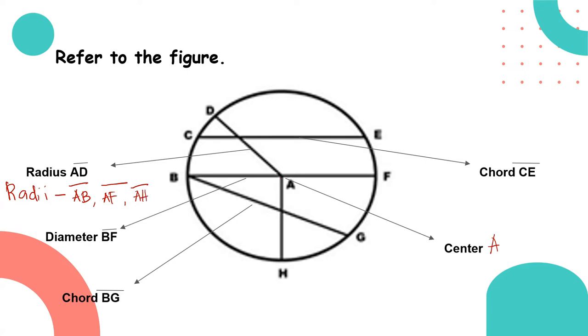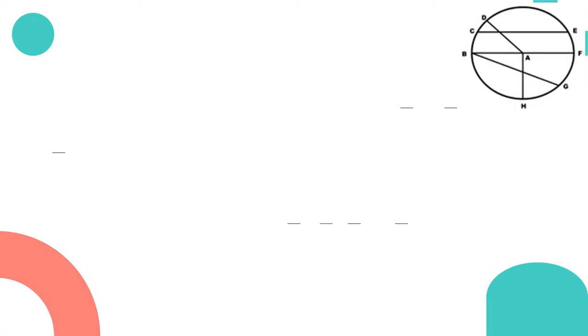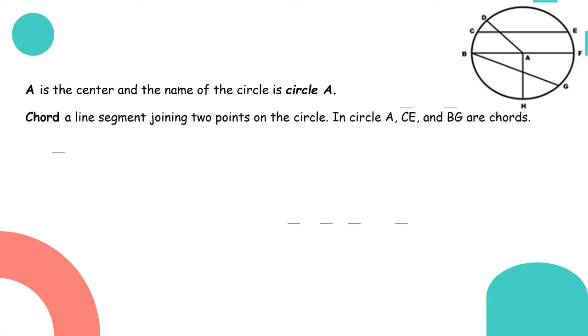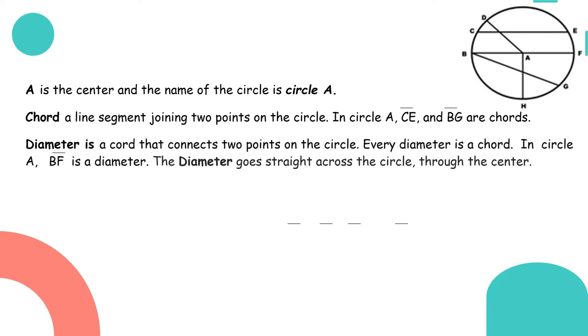So those are the parts of a circle. Referring to the figure with center A, let us identify the meaning of the following parts. A is the center and the name of the circle is circle A. Next, chord: a line segment joining two points on the circle. So in circle A we have line segment CE and line segment BG. These are lines that don't pass through the center but cross through. Next, diameter is a chord that connects two points on the circle. Every diameter is a chord. The difference is that it passes through the center. Line segment BF is the diameter. The diameter goes straight across the circle through the center. The longest chord is the diameter.